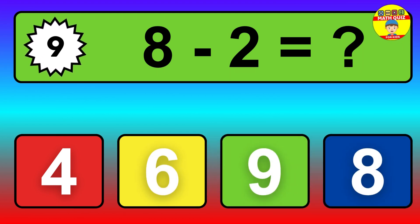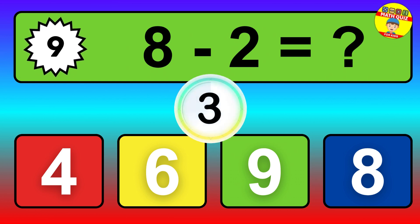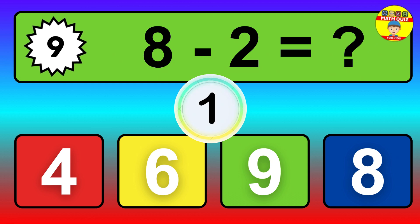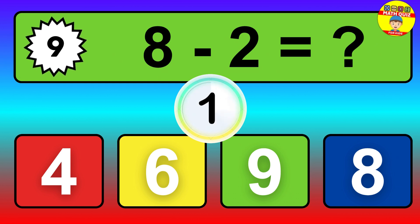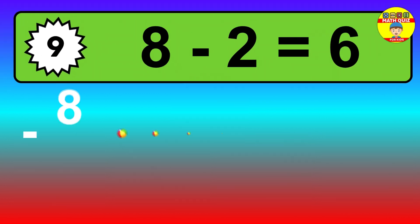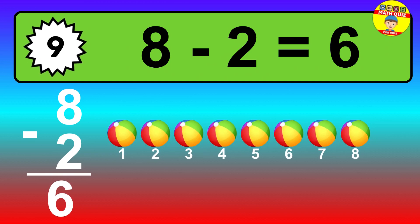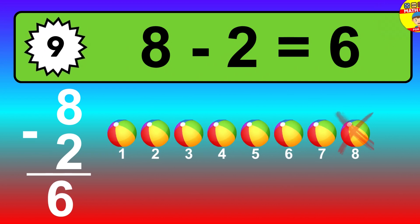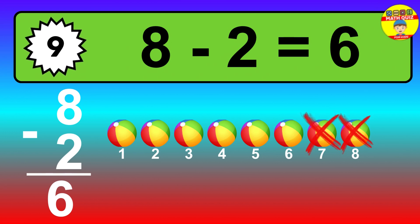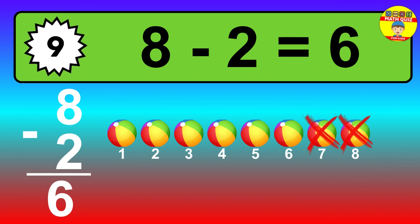Question 9. 8 minus 2 equals what? So the answer is 8 minus 2 is 6. Let's count it. 1, 2, 3, 4, 5, 6.